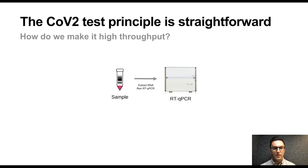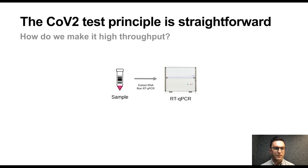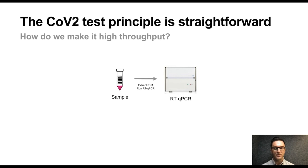At its core, the COVID test principle is pretty straightforward — it's just a PCR, specifically a reverse transcription PCR, and technically a qPCR, although there is usually no quantitative measure taken. It's just a qualitative detection or no detection. What we need to do to test for CoV-2 in a specific sample is take a swab from a person, extract the RNA, and run a PCR on that extracted nucleic acid to test for the presence of nucleic acid from the viral genome.